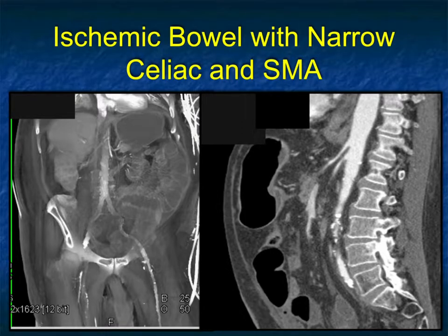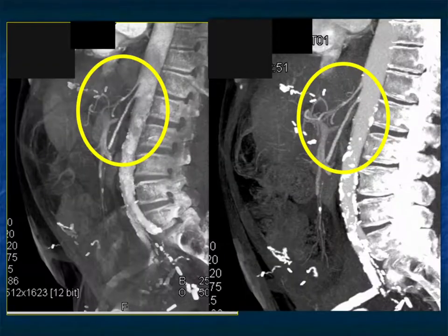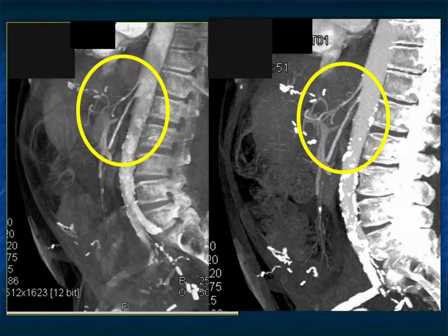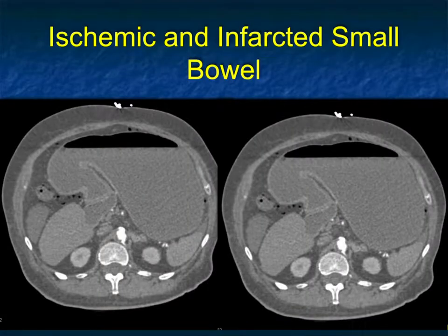Another thing to look at carefully besides vessel patency is vessel size. In this case of suspected ischemia, the SMA and celiac are both really tiny, as are their branches — a low flow state. When you see the SMA and celiac that small, that alone makes me say this is a low flow state and I'm worried about ischemia, even without vessel occlusion.